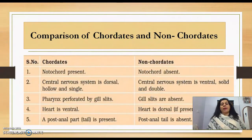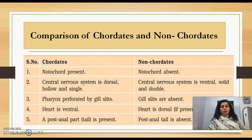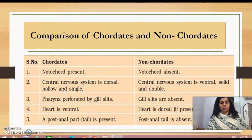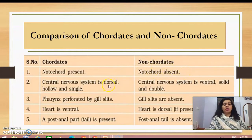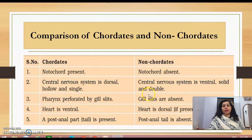Comparing chordates and non-chordates: notochord is present in chordates but absent in non-chordates. The central nervous system in chordates is dorsal, hollow, and single, whereas in non-chordates it is ventral, solid, and double. Pharynx is perforated by gill slits in chordates but gill slits are absent in non-chordates. Heart is ventral in chordates but dorsal in non-chordates.